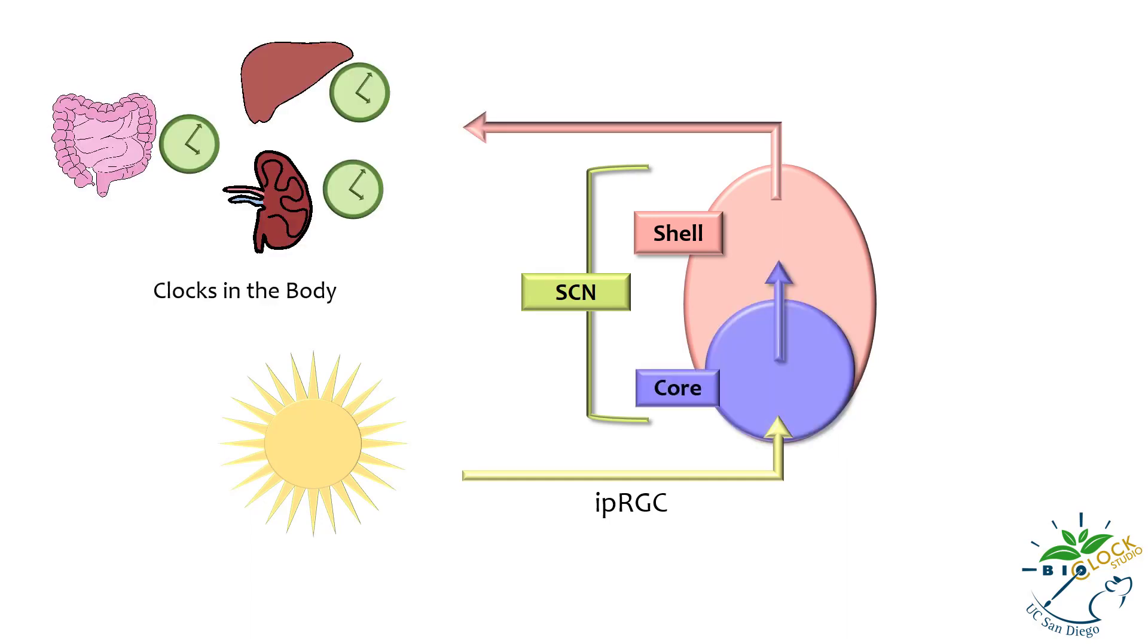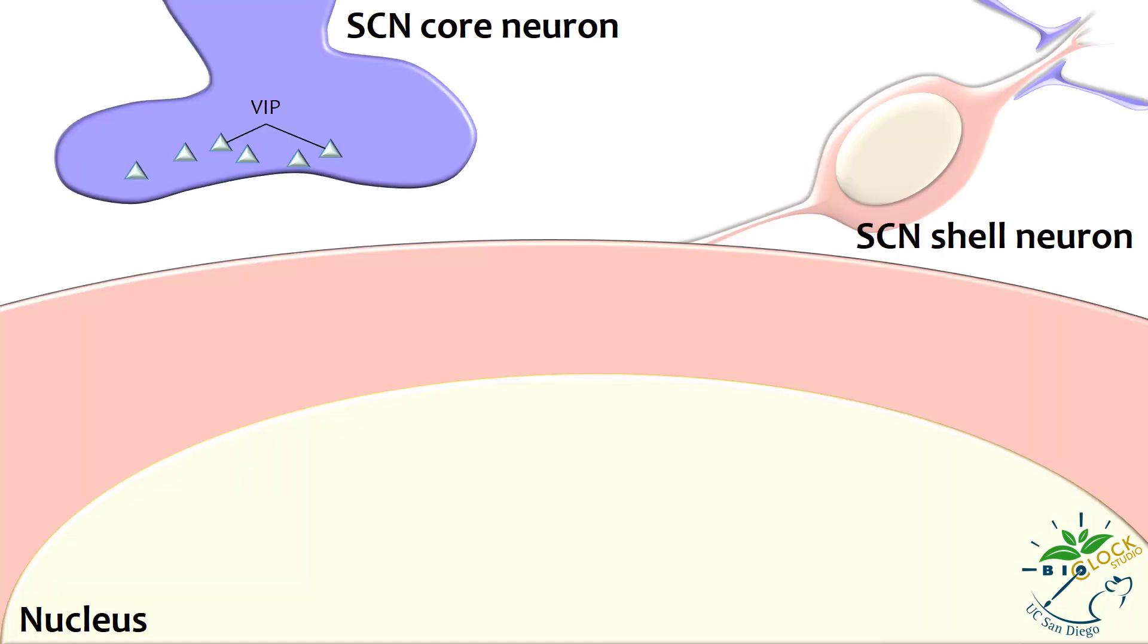As the core SCN neurons are activated or depolarized, action potentials are generated that travel down axons and trigger the release of VIP and GABA. VIP is released into the synaptic cleft and binds to VIP receptors on the membrane of the SCN shell neuron.